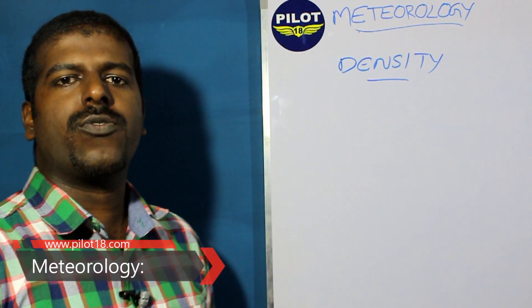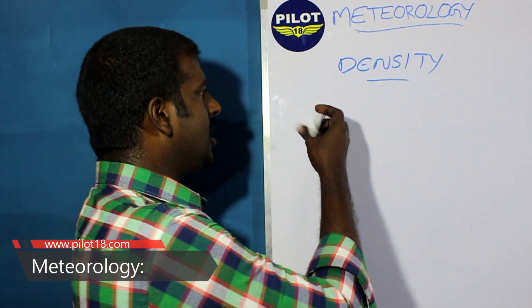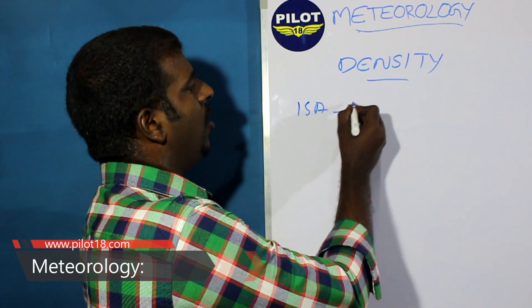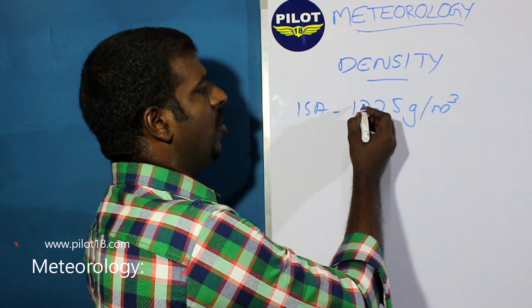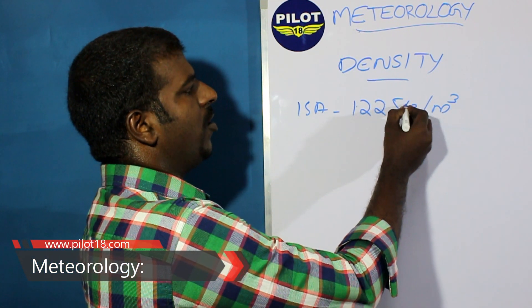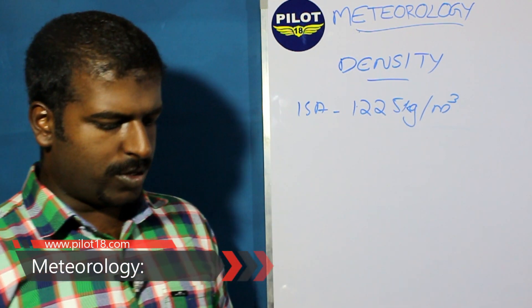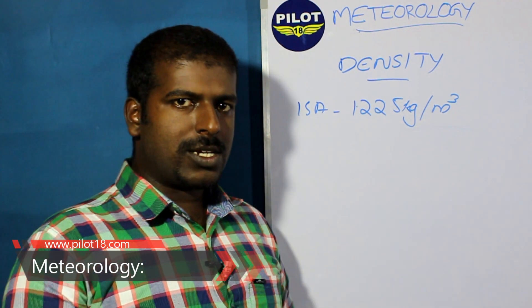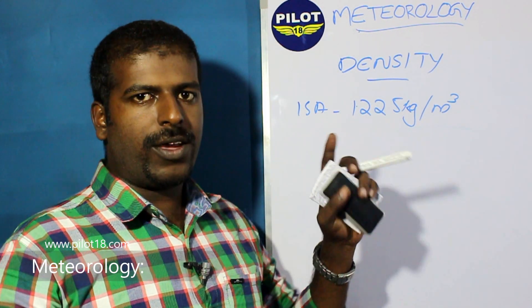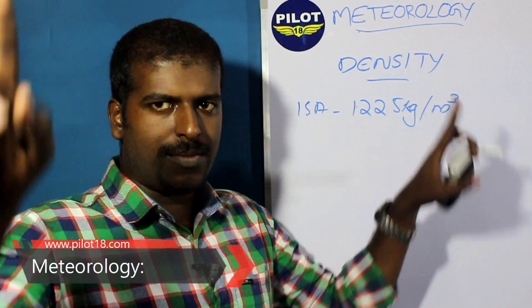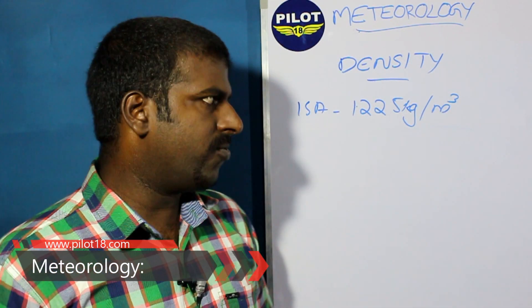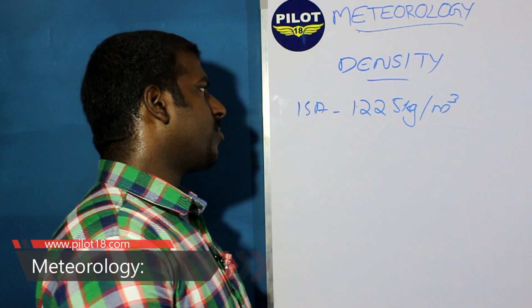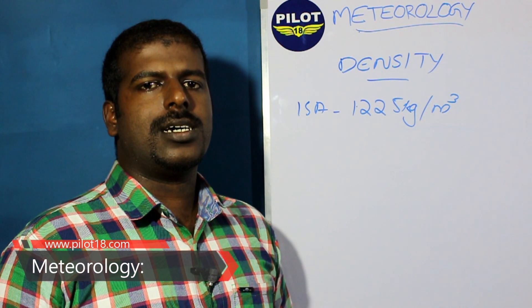In ISA conditions, the density of air is 1.225 kilograms per meter cube. This means there should be 1.225 kilograms of mass in one meter cube box — that is, there should be 1.225 grams of air in that unit volume.